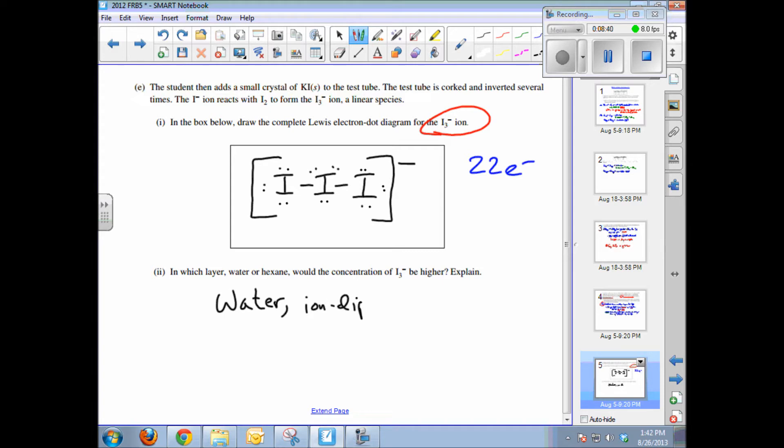Between the I3 minus ion and water. Whereas in hexane, which is a nonpolar solvent, there's not as strong interactions. IMFs are just not possible in hexane.